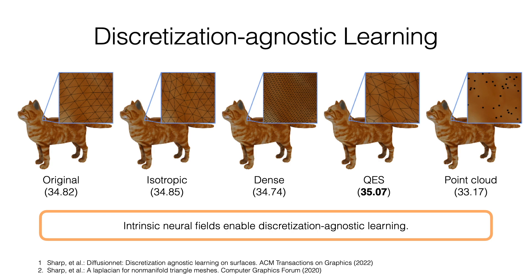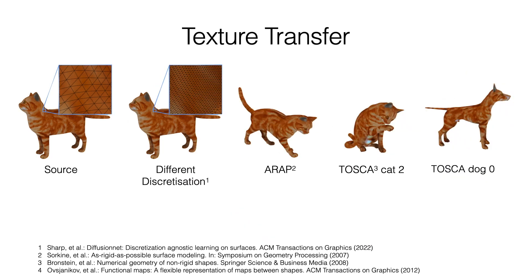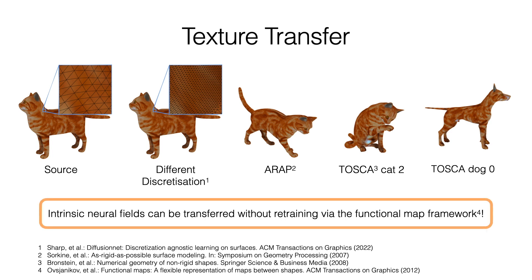Intrinsic neural fields also work for point clouds because the Laplace-Beltrami operator can be computed reliably on them. Finally, we can transfer a pre-trained intrinsic neural field without retraining using functional maps. This works across different discretizations of the same mesh and as-rigid-as-possible deformations. Furthermore, transfer is possible to different shapes, like the cat and the dog from the Tosca dataset.